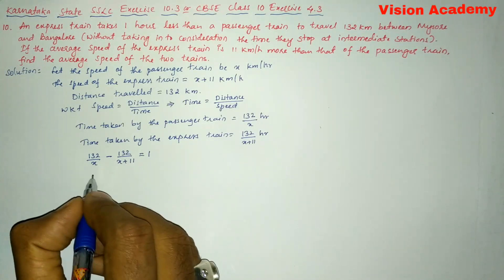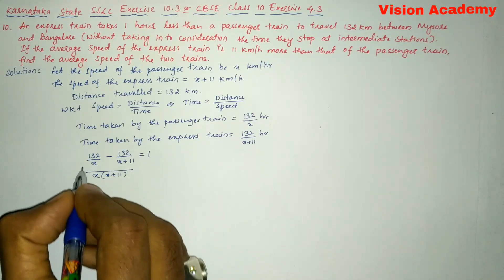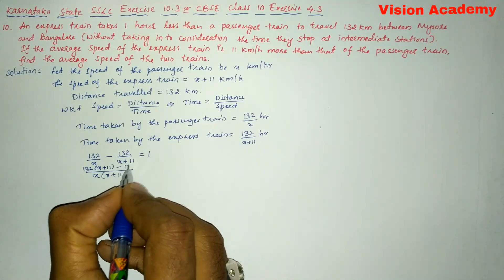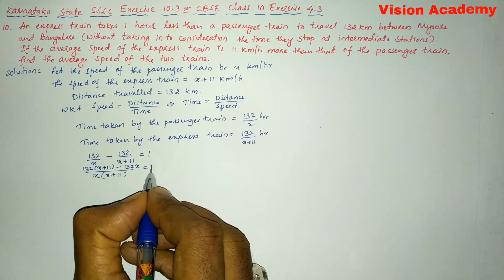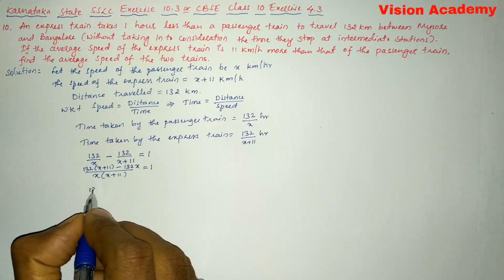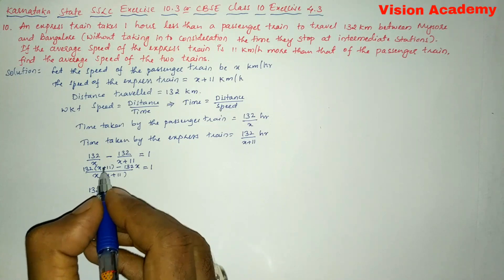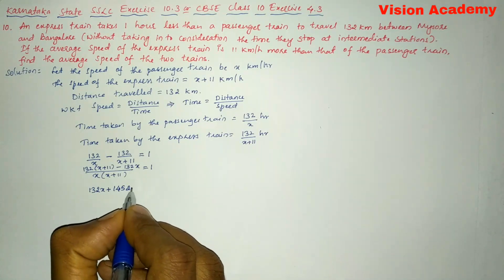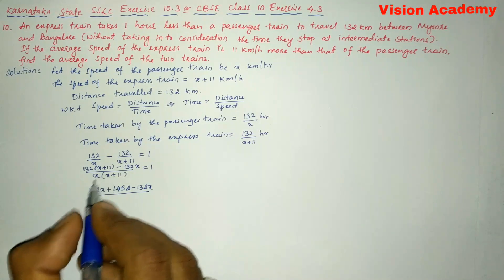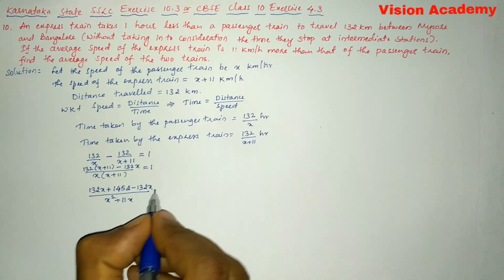Next we are going to simplify this expression by taking the LCM, which is x into x plus 11, on the denominator. Cross multiplying gives us 132 into x plus 11 minus 132 into x, all divided by x into x plus 11, equals 1. Expanding: 132x plus 132 into 11, which is 1452, minus 132x, over x squared plus 11x equals 1.